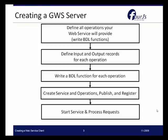The basic steps for creating a Genaro web services server application are: first, define all of the operations that you want your web service to provide — these are going to be the function or functions that make up your service. Then you're going to define the input and output records for each of the operations, write a BDL function for each operation, and create the service, its operations, publish it and register it. Last, you'll want to start the service and manage the way that you process the requests.